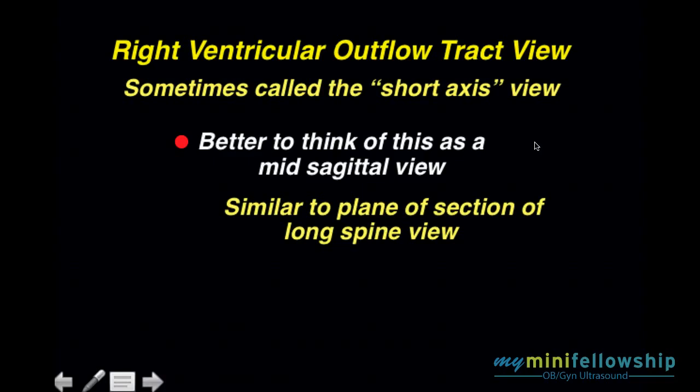Now if I were to say, please go in and get me a longitudinal view of the thoracic spine, on the way to the scanning room, you might think to yourself, I don't know if I can get it — I might or might not be able to get it. But the last thing on your mind is, what's the plan? You already know the plan to get a longitudinal view of the thoracic spine. It's practically inborn in our brain.